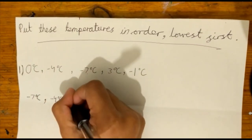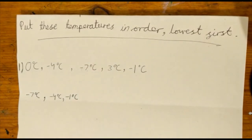Then we have minus 1 degrees. It can't be 3 degrees because it is higher than 0 degrees, so it is the next coldest.